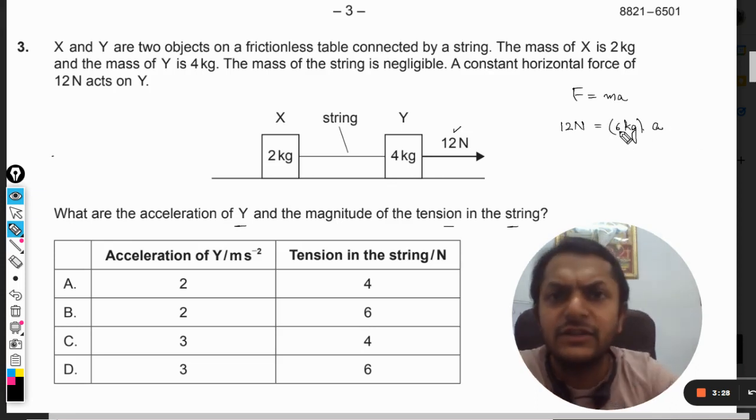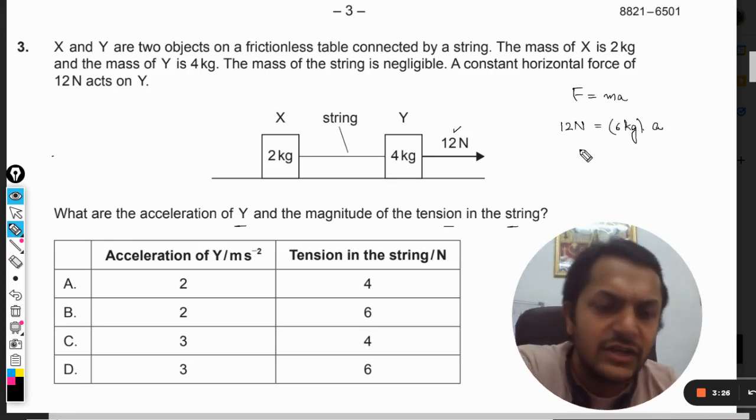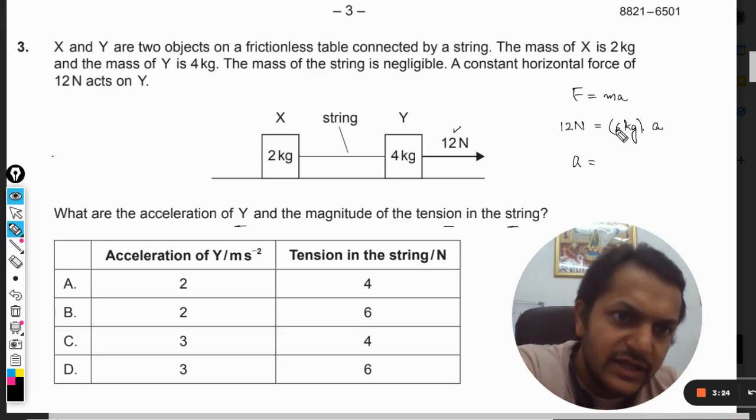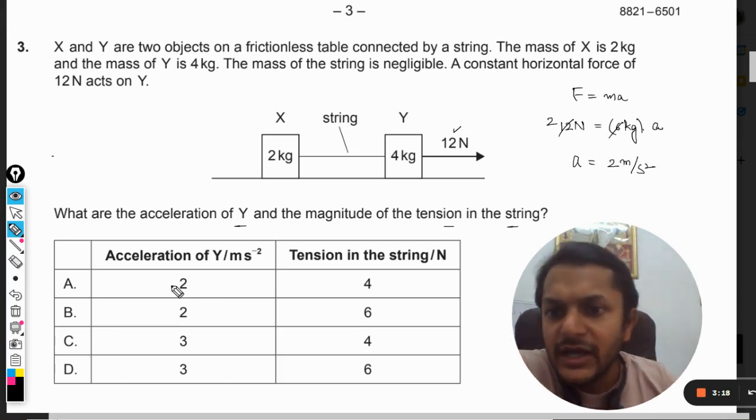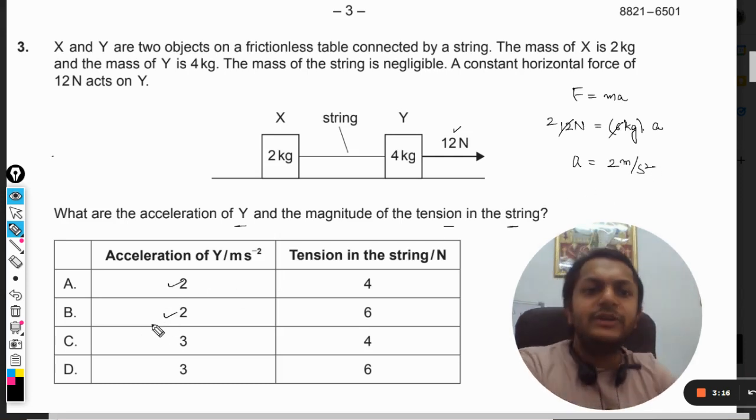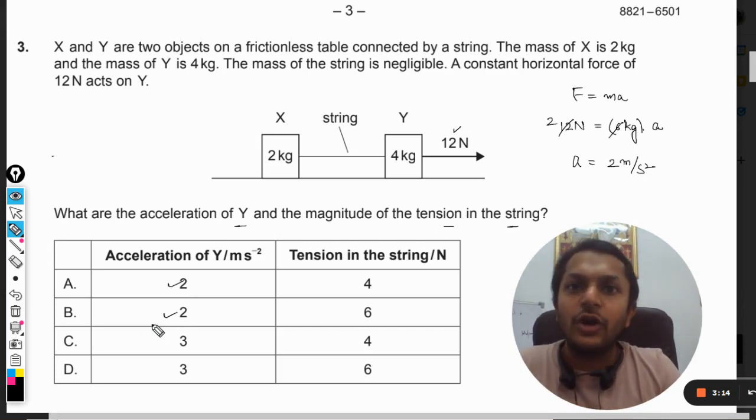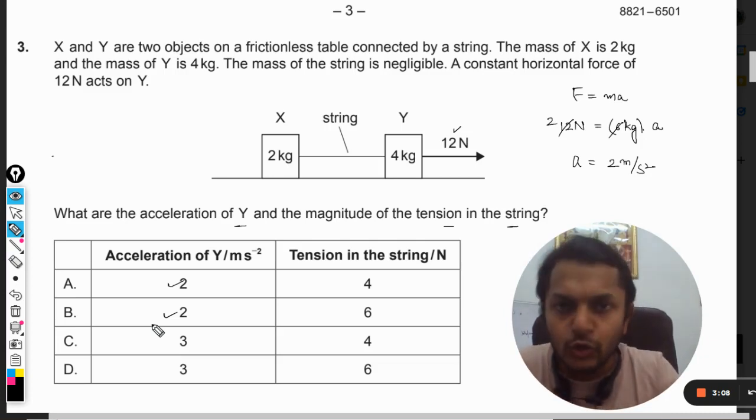And this is acceleration. I'm writing units here together with the value just for clarification. So the acceleration will be 2 meter per second square. So 2 meter per second square is the acceleration of both of the masses. Obviously they are now asking the acceleration for Y, so our answer will be 2 meter per second square.